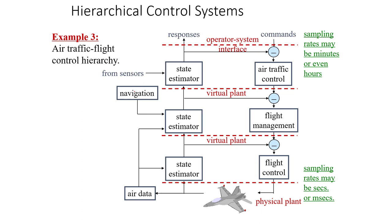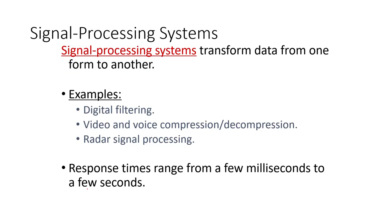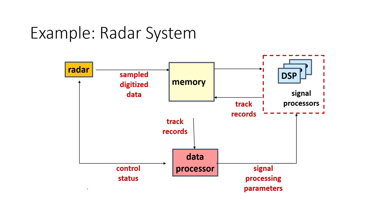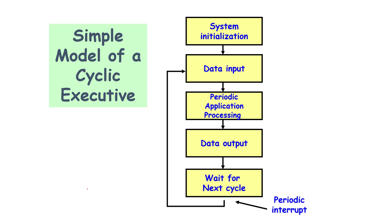We have also looked at hierarchical control systems where the sampling rates vary across different layers of the hierarchy. At the top, for example in air traffic control, the sampling rate is much lower; at the bottom the sampling rate is much higher, and there is a need to integrate all of this into a single real-time system. Any signal processing system will have many of these elements. Even in a radar system we digitize the data and track it.